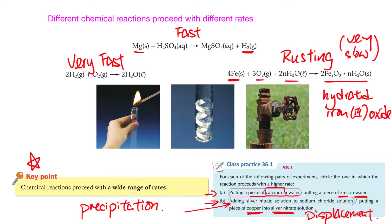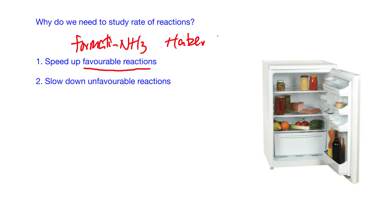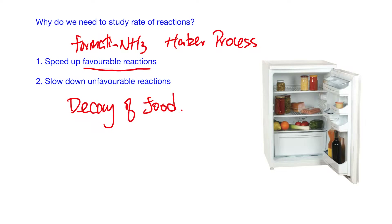So why do we need to study rate of reactions? Once we know all the factors affecting rate of reactions, we can either speed up favorable reactions — for example, the formation of ammonia in the Haber process, if I want ammonia to form faster I can do something to increase the rate — or slow down unfavorable reactions, for example the decay of food. If I want food to keep longer, I can do something to slow down the reaction.